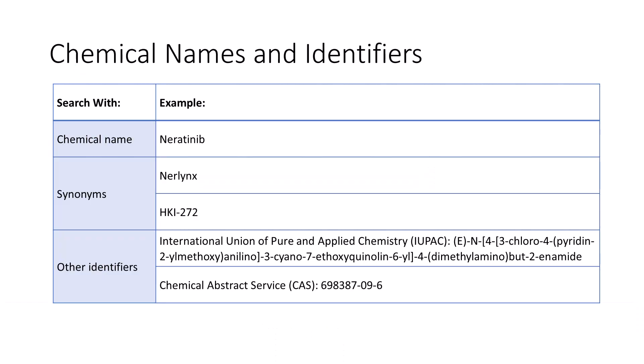You can search PubChem with many different types of chemical identifiers. For example, you can search for a chemical name like neratinib, or search with a synonym for a chemical, like Nerlinx or HKI-272, which are synonyms for neratinib. PubChem also recognizes other identifiers, including the International Union of Pure and Applied Chemistry, or IUPAC name, and Chemical Abstract Services, or CAS numbers. You can see these identifiers for neratinib on the screen.